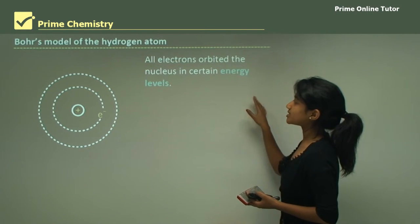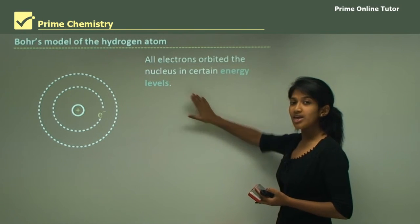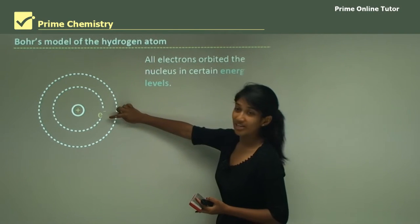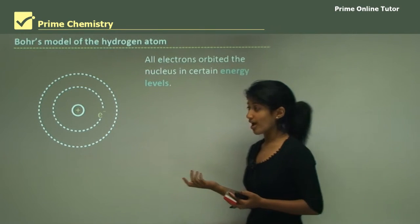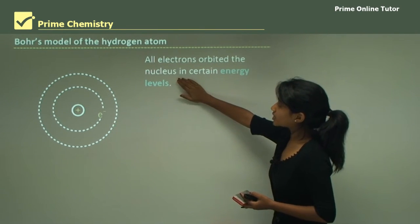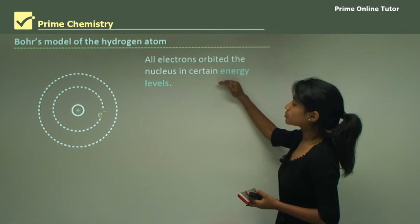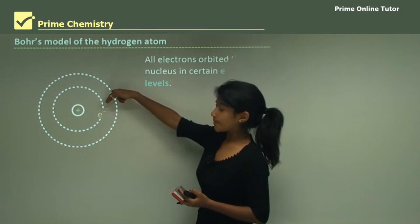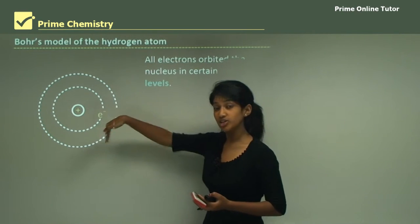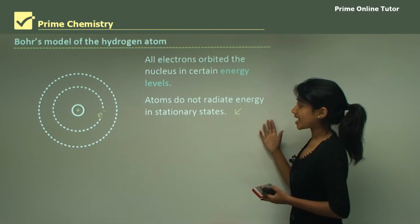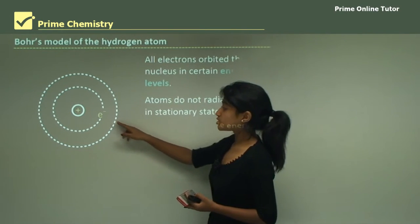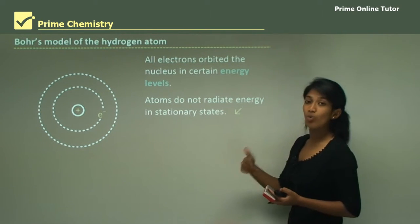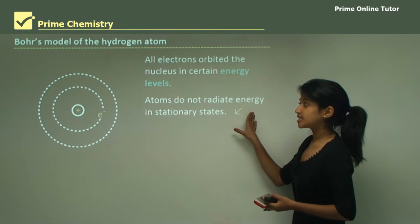Bohr said that all electrons orbited the nucleus in certain energy levels. He used Rutherford's model of the atom, but focused mainly on the electrons that Rutherford was not able to describe. He said that electrons would orbit the nucleus in certain energy levels — an electron would only orbit its specific energy level and would not move to another. Atoms do not radiate energy in stationary states; when atoms are in one energy level, they are not radiating any energy.